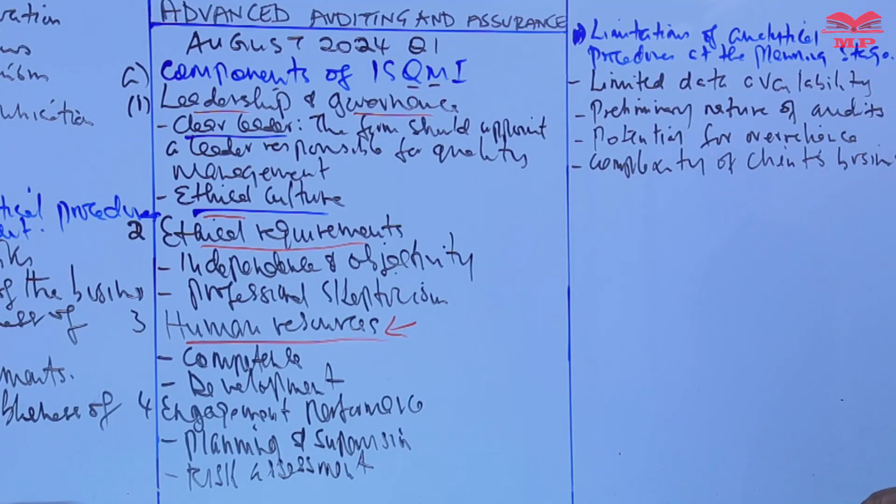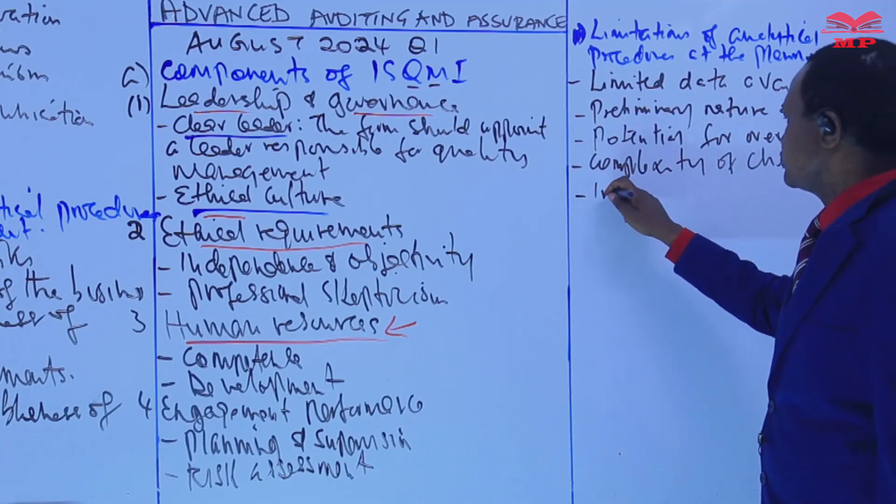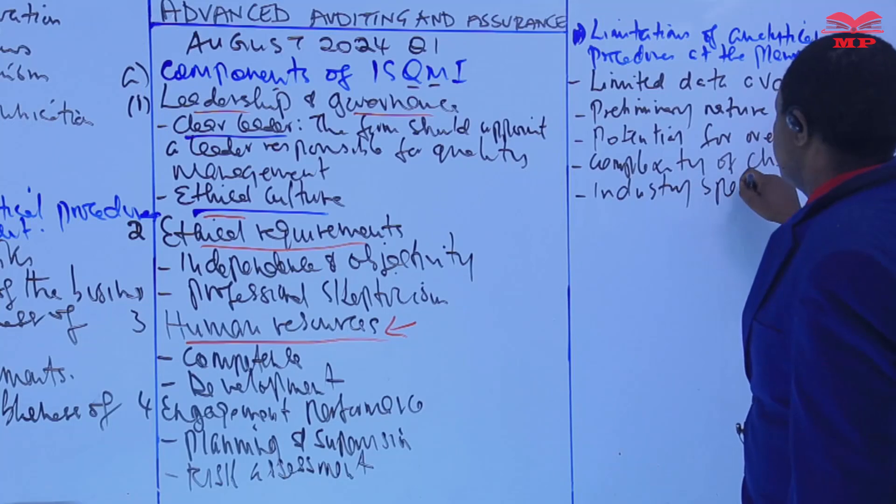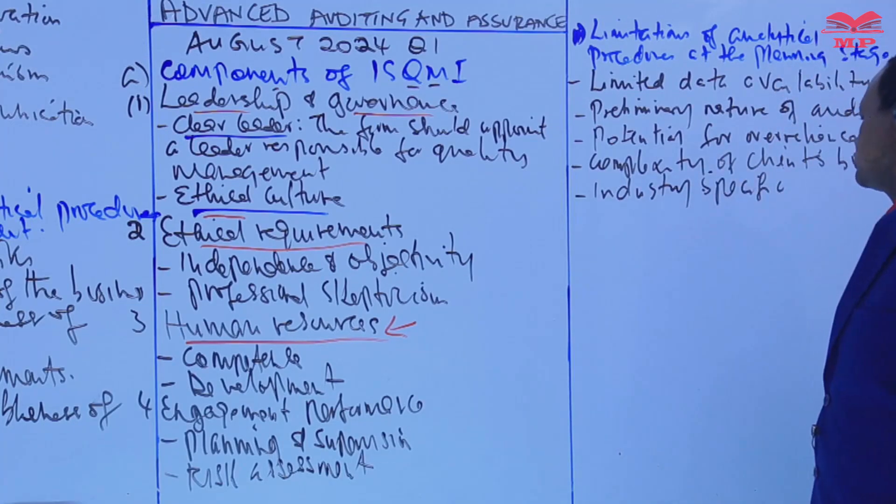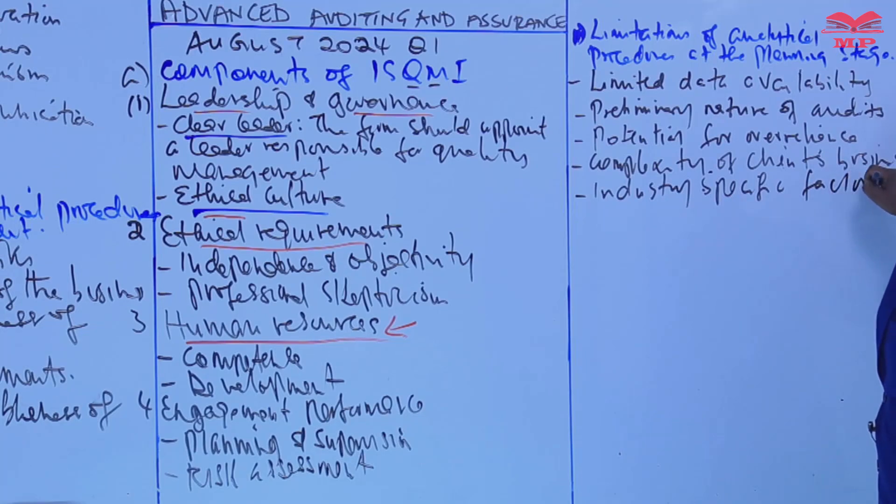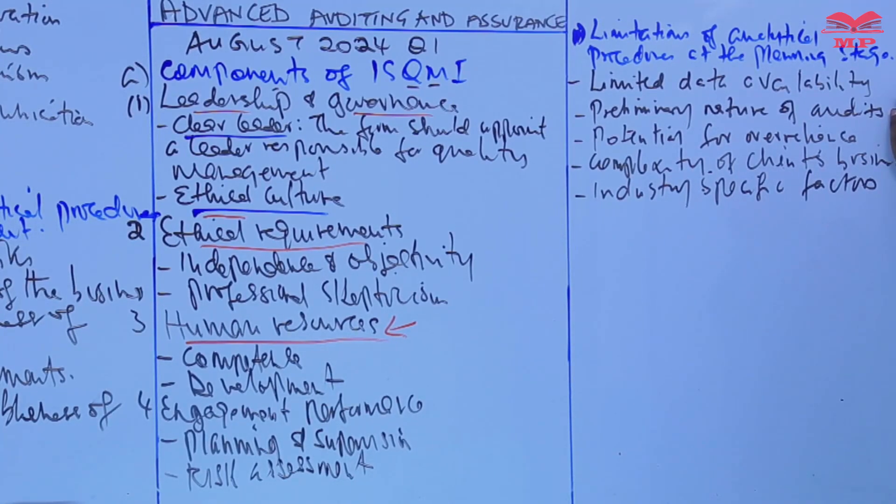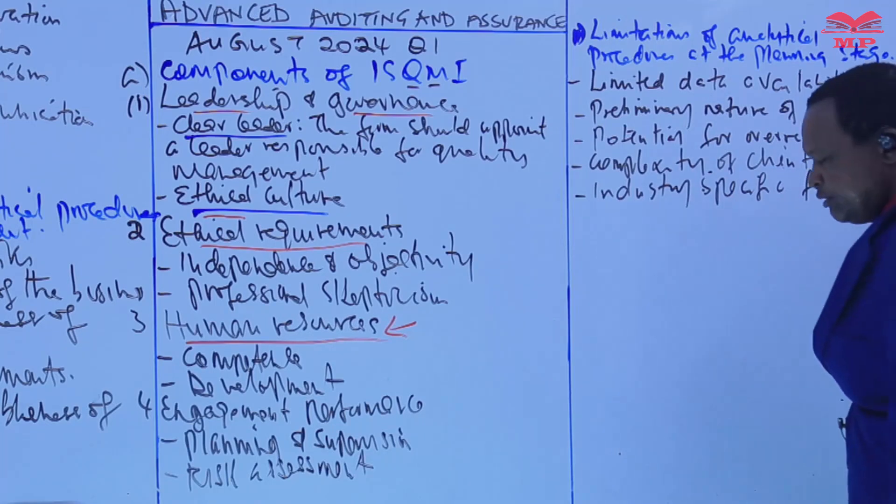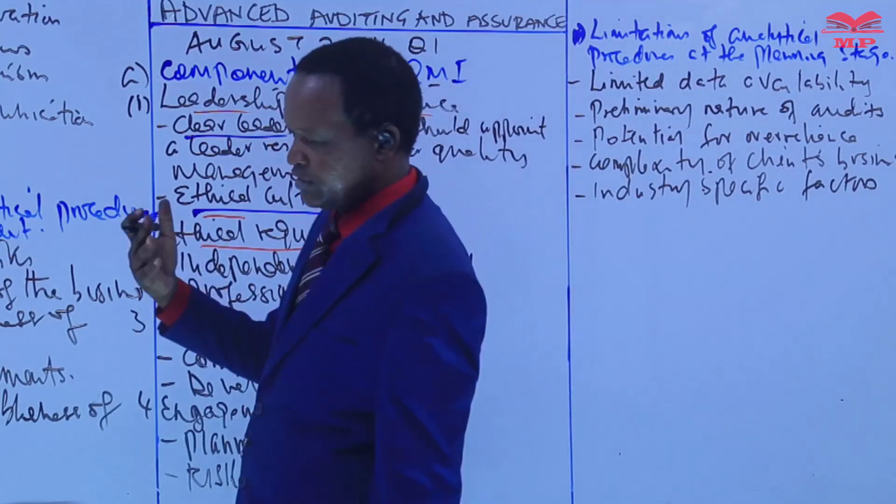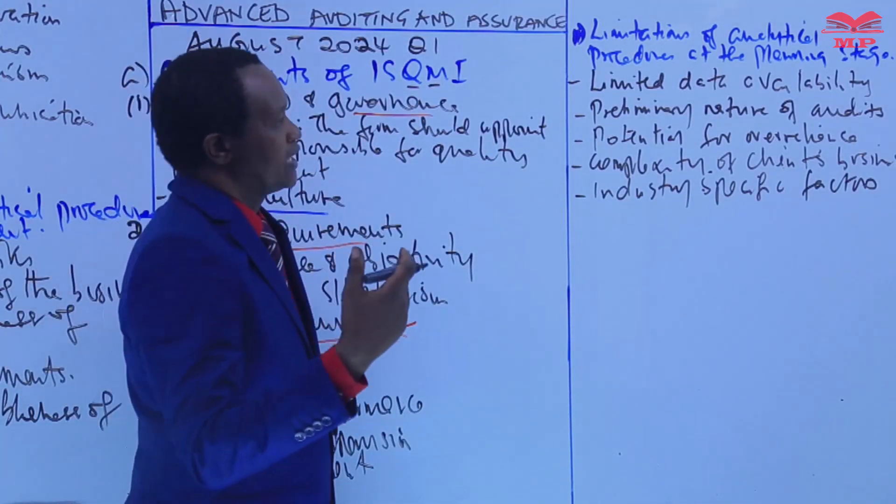We have to give three limitations, but let me give you the fifth one that is related to industry-specific factors. How is it a limitation? Now the appropriateness of analytical procedures can vary depending on the industry. When you say the industry, we mean the industry within which the company operates.